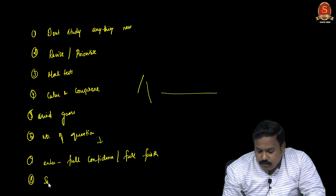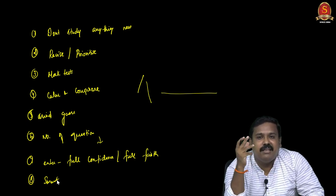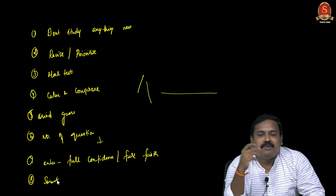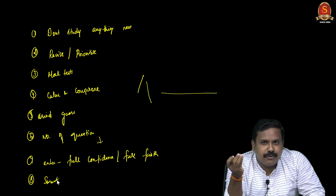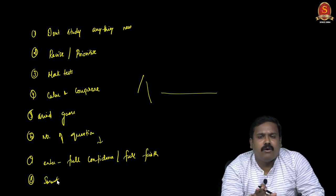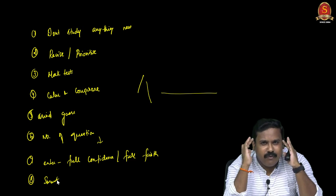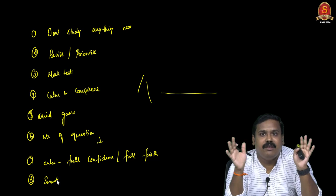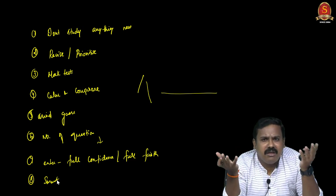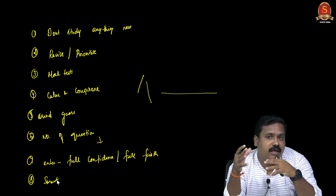Be smart, not emotional. Don't think 'I'm a political science student, I must score 15 out of 15.' Even law and political science students make mistakes in polity. Your cutoff is not 100%, 90%, or even 80% — it hovers around 50–55%, sometimes 60%. Decide wisely based on the nature of questions and topics you've studied. You have the liberty to leave difficult or unfamiliar questions.